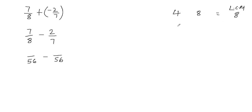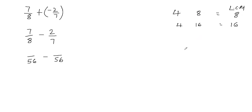Similarly, if you have 4 and 16 — since 16 is a multiple of 4 — the least common multiple of 4 and 16 is going to be 16.